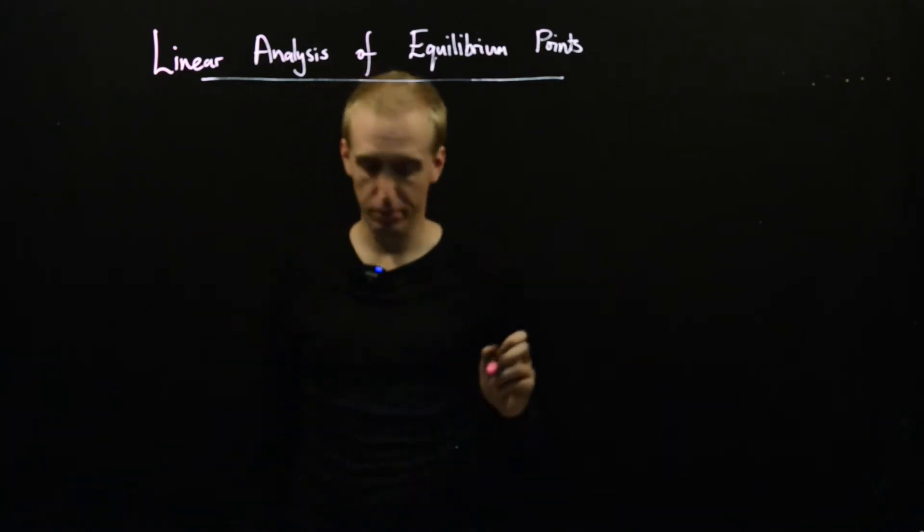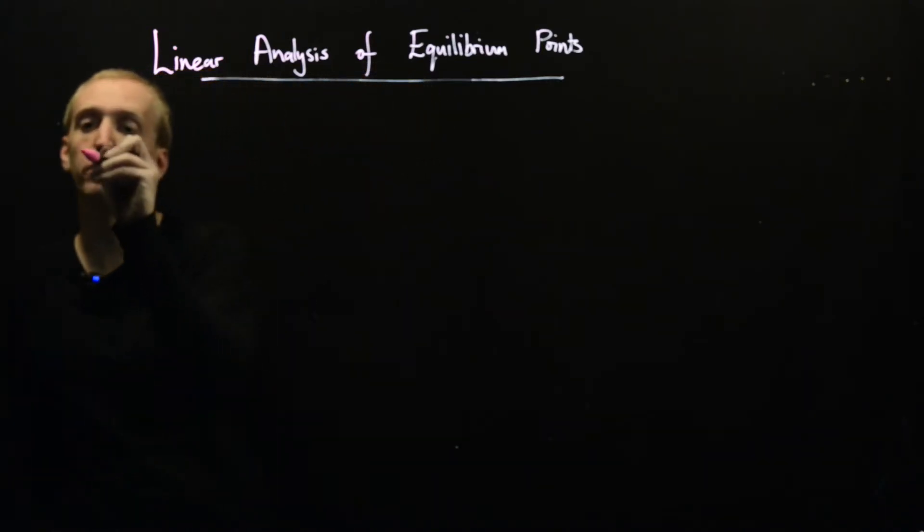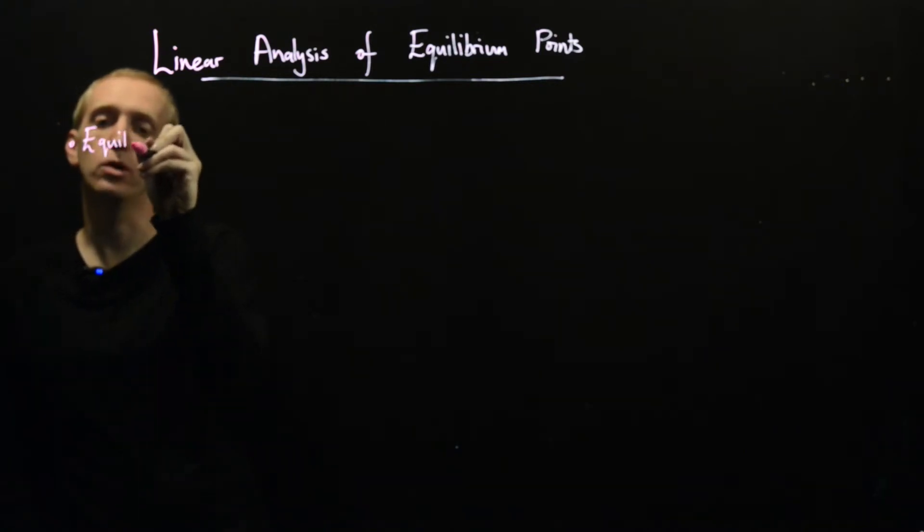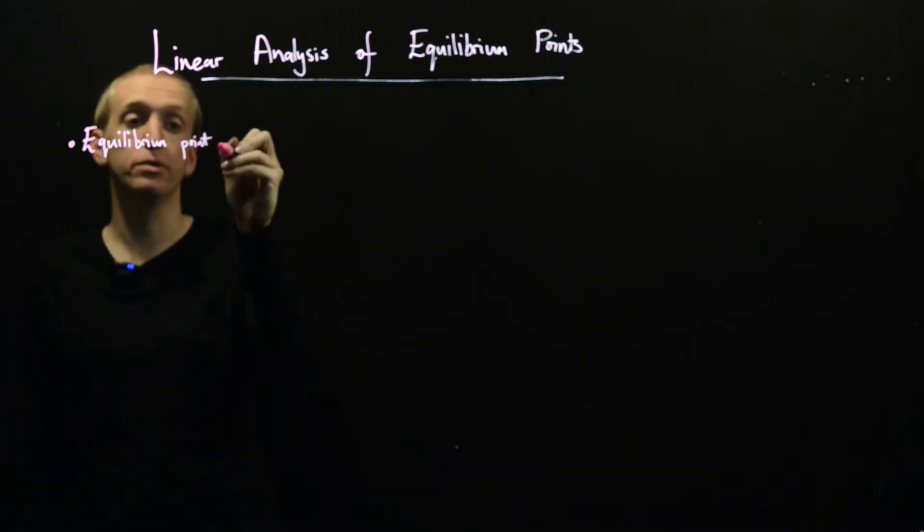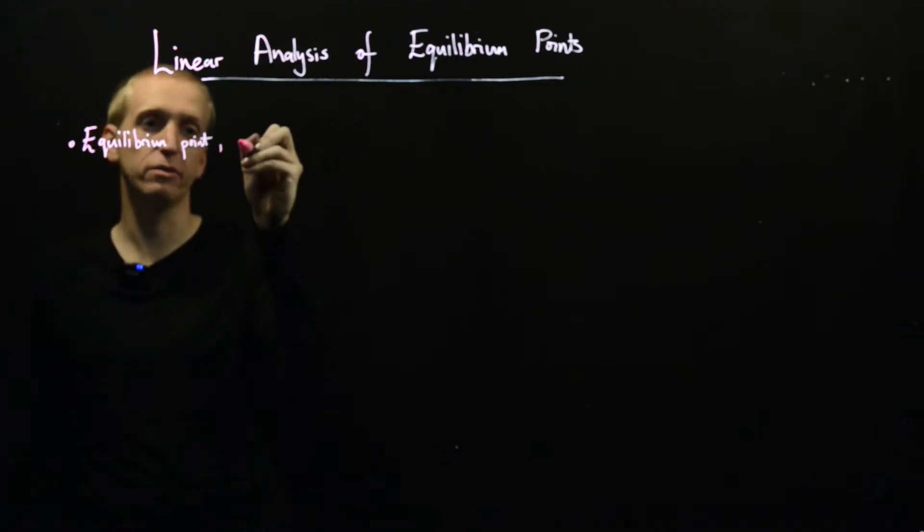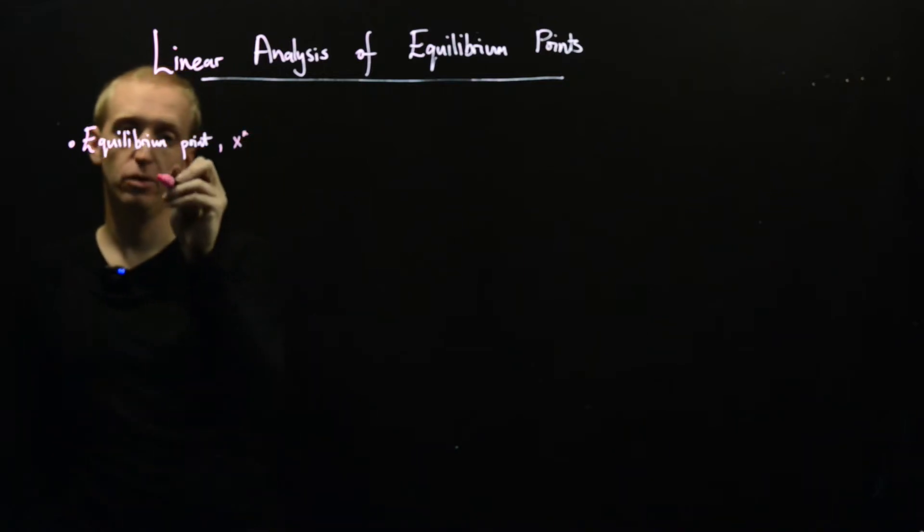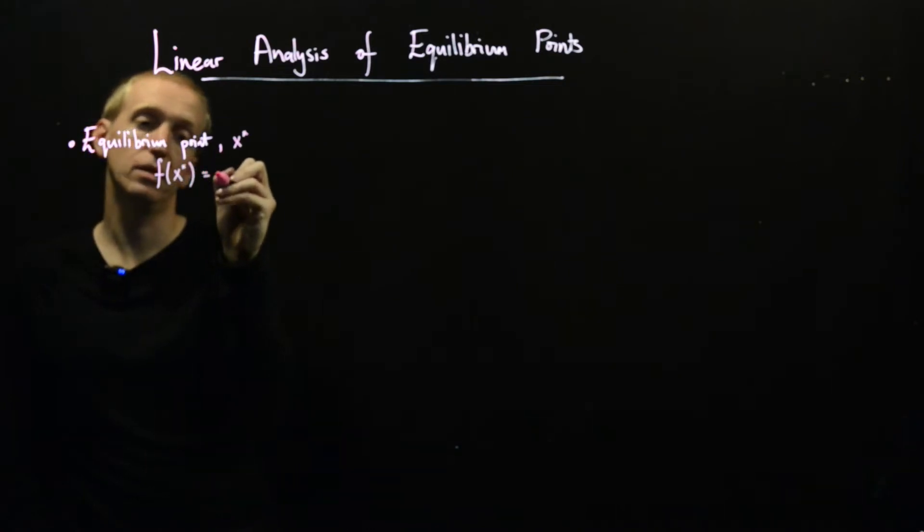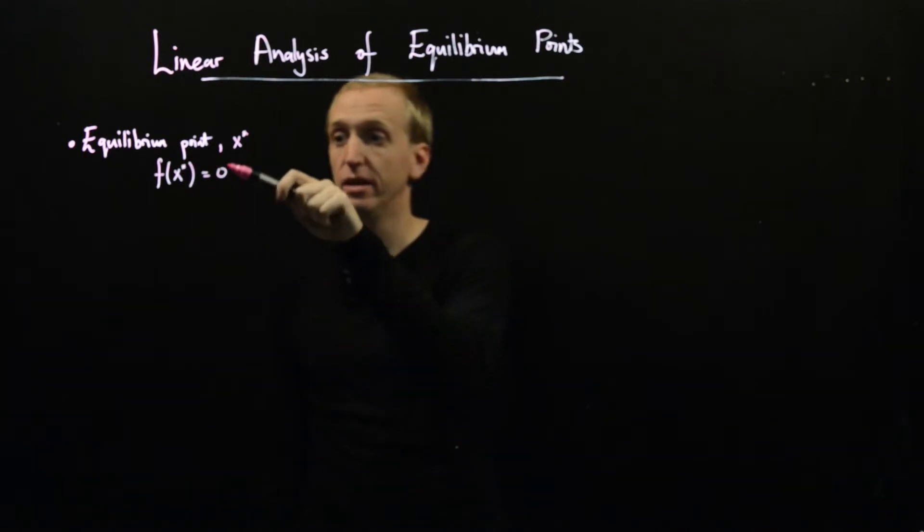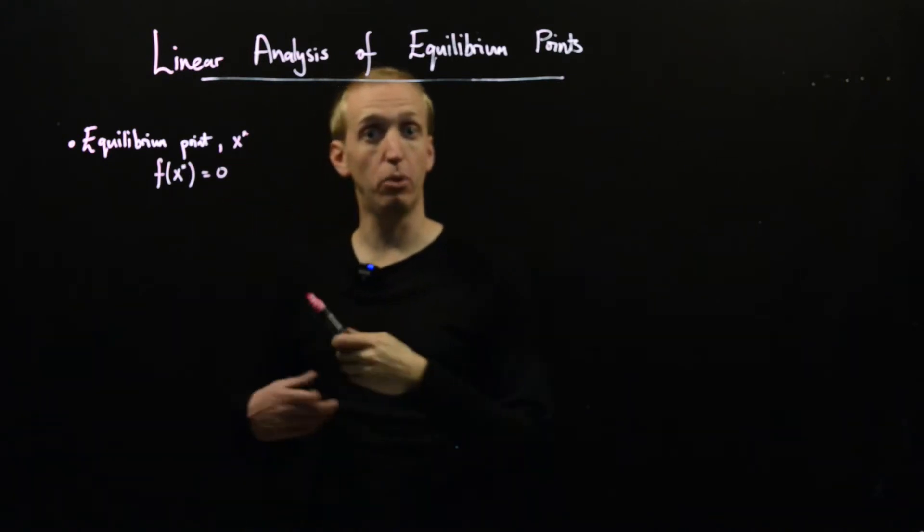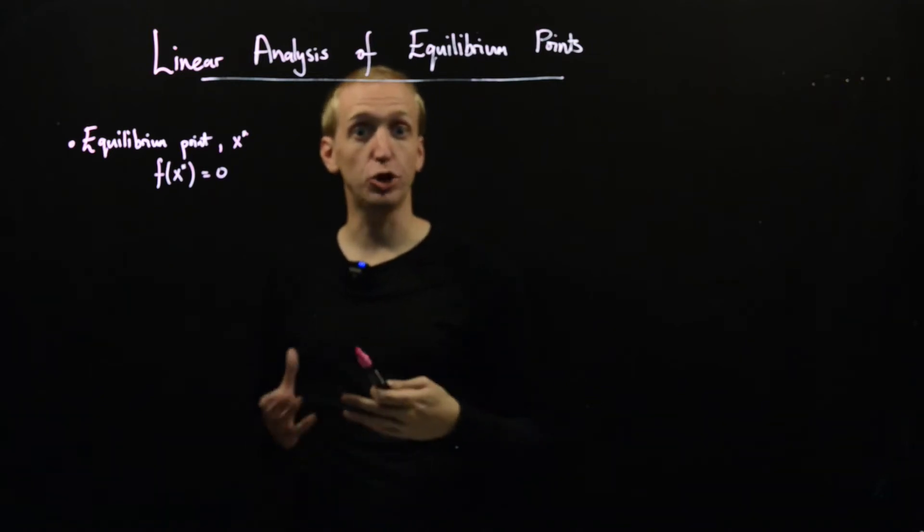So just a brief recap, what is an equilibrium point? An equilibrium point, when we have no input, is a point in the state space, so it's a point x star where f of x star is equal to zero. So it's a value for the entries of our state vector such that x dot is equal to zero. So a point where x is not changing over time.